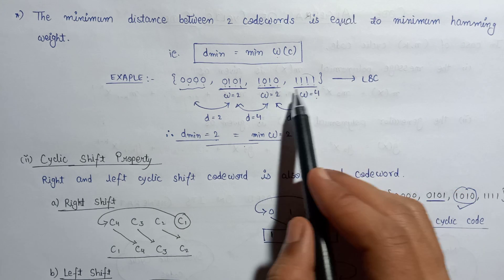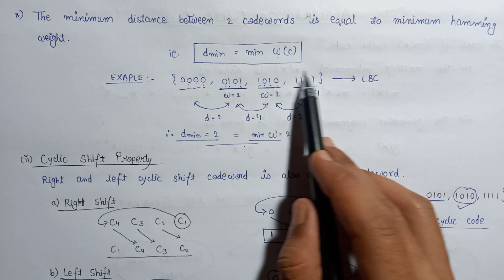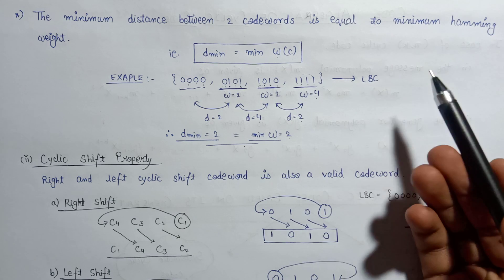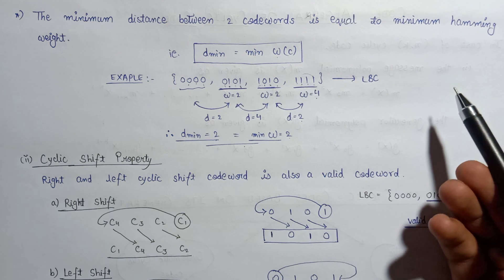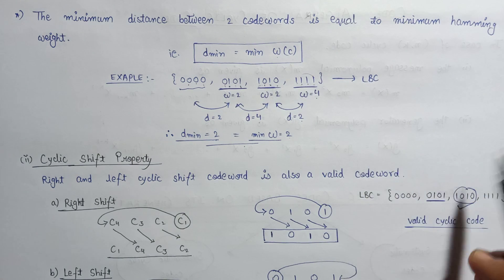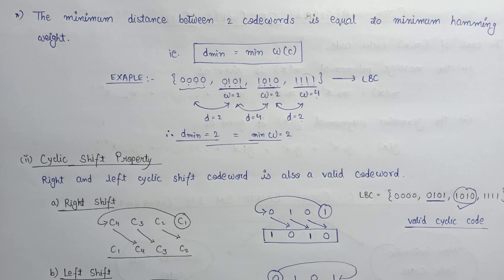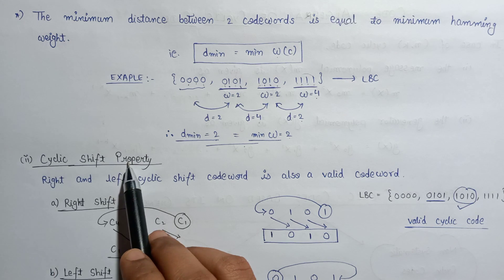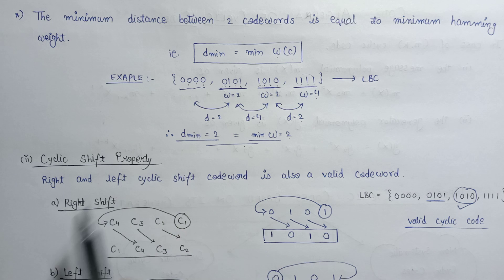This linear block code follows the linearity property successfully. Now let us have a look at the second property, which is the cyclic shift property.